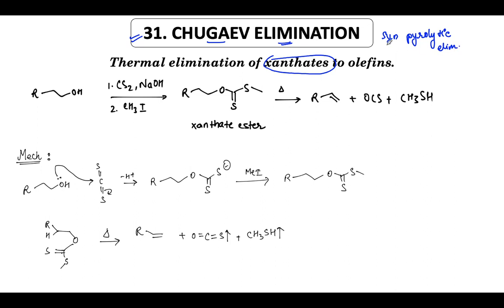Syn Pyrolytic Elimination is a category of reactions because there are a lot of reactions under it. There is Cope Elimination, there is Xanthate Elimination, and there is Acetate Pyrolysis. Chugaev Elimination is one of those reactions undergoing Syn Pyrolytic Elimination.